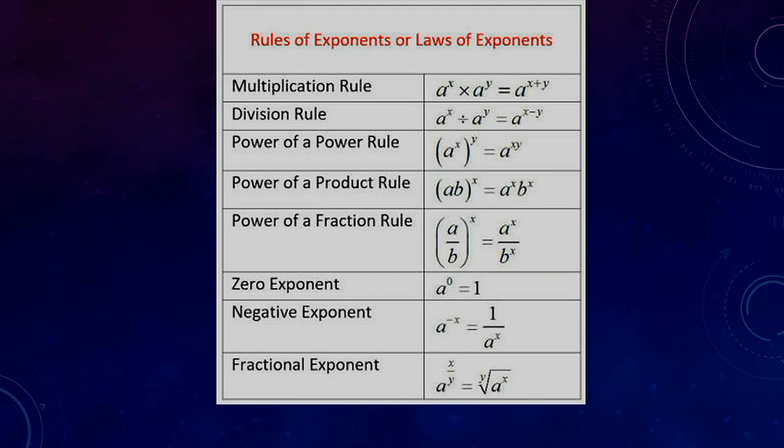The power of a product rule. This happens when you have a bracket and you have a bracket raised to a power. You basically only have to multiply or distribute in the exponent. So a b to the power x is equal to a to the power x times b to the power x.